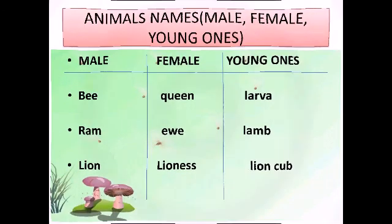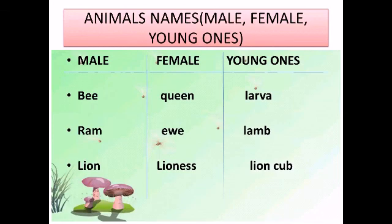Next is bee — female: queen, young: larva. Next is ram — female: ewe, young: lamb.